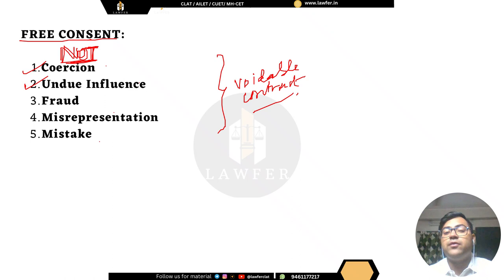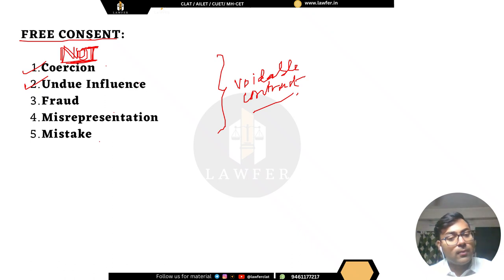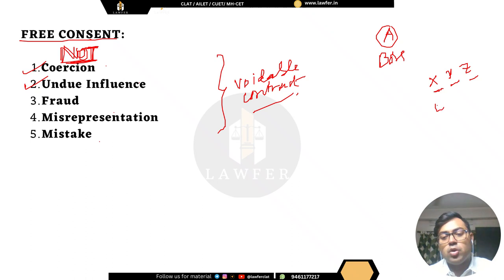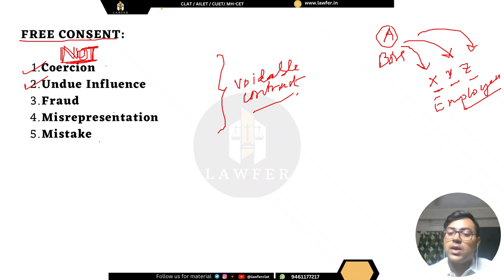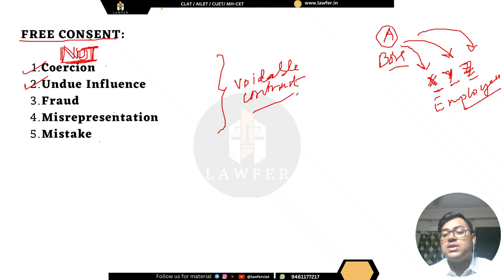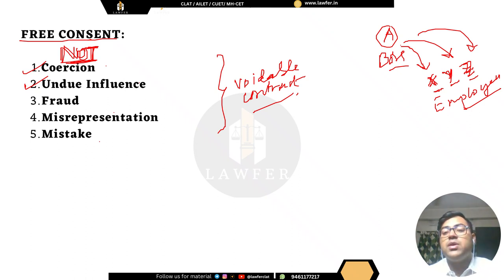Second is undue influence. This means a person is in a position to influence the decision of another. For example, A is the boss and X, Y, Z are employees working under A. If A unduly manipulates or influences the decisions of X, Y, and Z to enter into a contract, that contract will be a voidable contract — not void, but voidable.